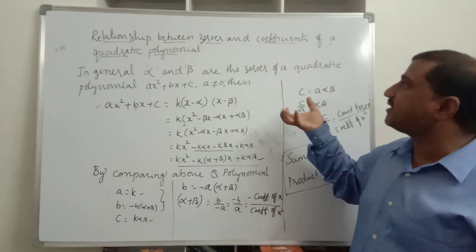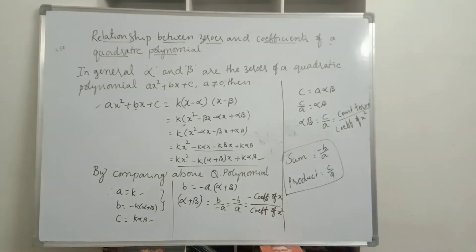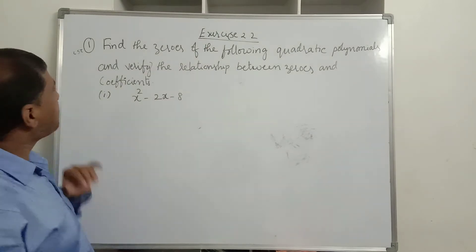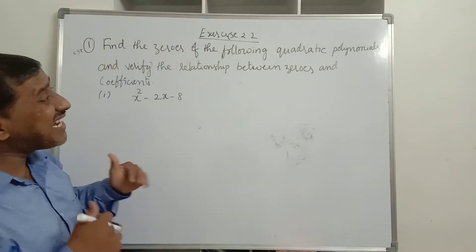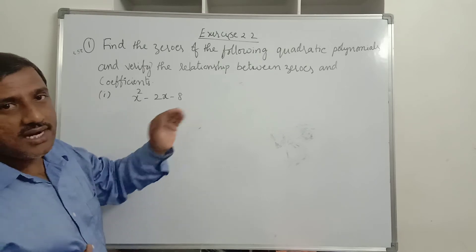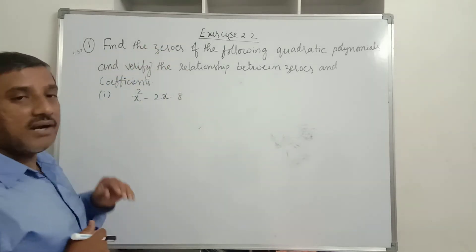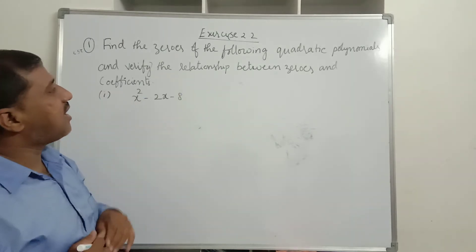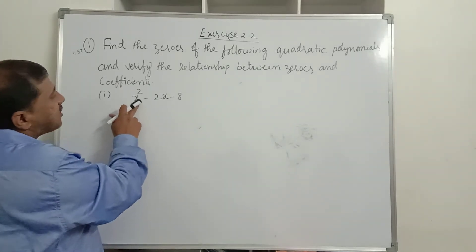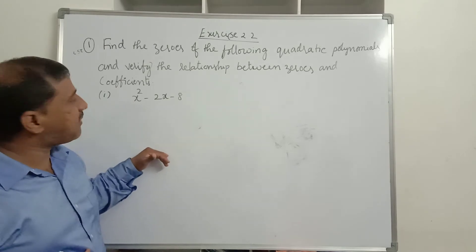Now we will verify whether this relationship is satisfied with some examples. We will discuss question 1 from exercise 2.2: find the zeros of the following quadratic polynomials and verify the relationship between zeros and coefficients. The first polynomial is x² − 2x − 8. Is it a quadratic polynomial? Yes, because its degree is 2.